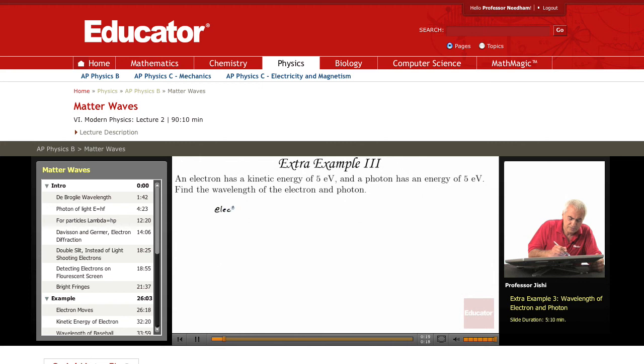For the electron, K is 5 eV. But for the electron, K is P squared over 2M.